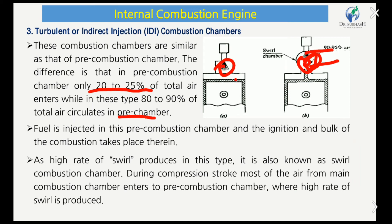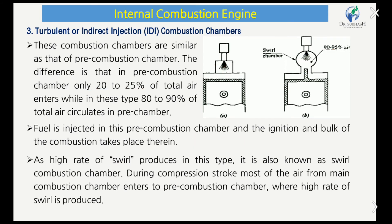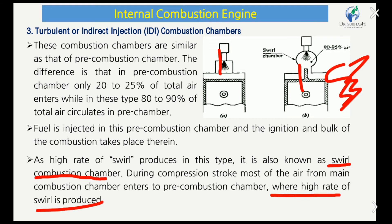Fuel is injected into this pre-combustion chamber, and ignition and bulk of the combustion take place there. During the compression stroke, most of the air from the main combustion chamber enters the pre-chamber where a high rate of swirl is produced. This high swirl increases the surface-to-volume contact ratio, so ignition and combustion are more complete. This type is also known as the swirl combustion chamber.